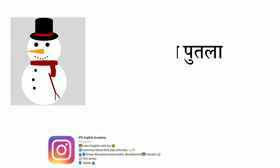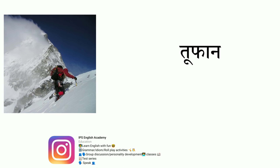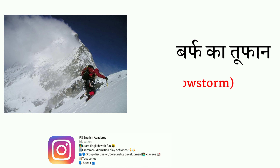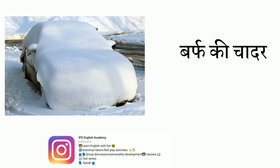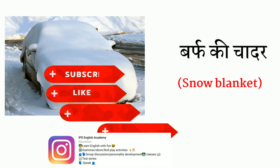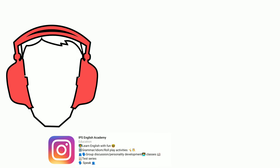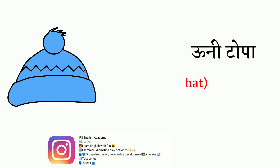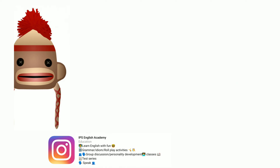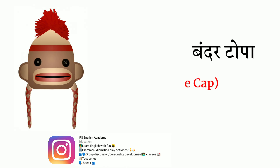Next we have 'barf hona' — when it snows, that's called snow, and when snowfall happens, that's called snowfall. The individual snowflakes are called snowflakes. The balls of snow that children play with are called snowballs — like in Doraemon. A snow figure is called a snowman. A snow storm is called a snowstorm. And a blanket of snow on the ground is called a snow blanket.